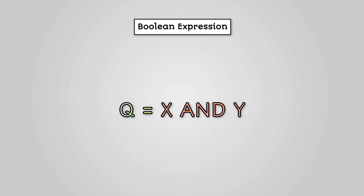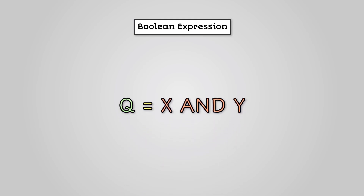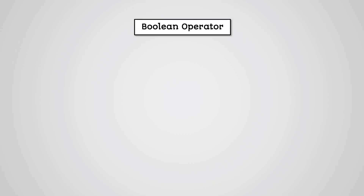If we wanted to write this as a Boolean expression, we can write it as Q equals X AND Y. Much like with NOT gates, we can use a Boolean expression operator instead. This uses a full stop to represent an AND gate, so our Boolean expression written using a Boolean operator would be this.